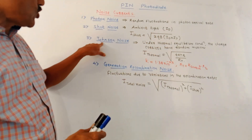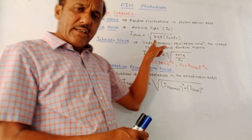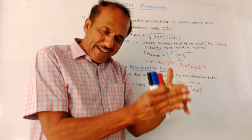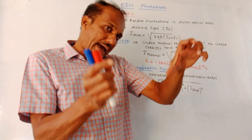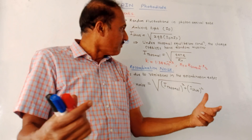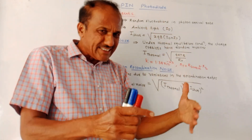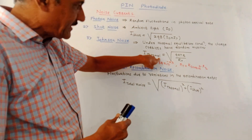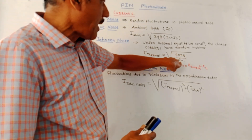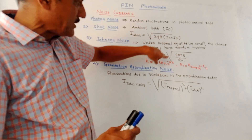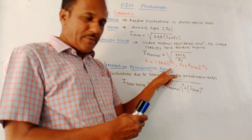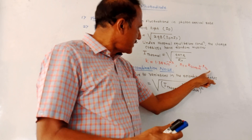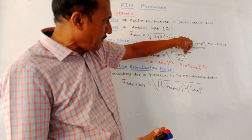The third type of noise is Johnson noise or thermal noise. Under thermal equilibrium conditions, charge carriers have random motions. Due to these random motions, noise is created at the output, called thermal or Johnson noise, given by: I_thermal = √(4kTB / R_T), where k is Boltzmann's constant (1.38 × 10⁻²³), R_T is the total resistance (combination of source and load resistance), T is the operating temperature, and B is the bandwidth.